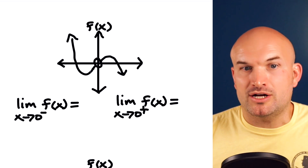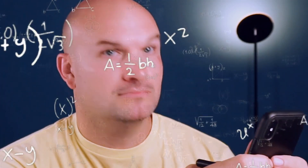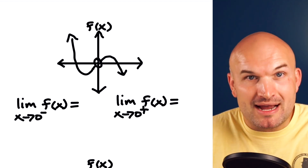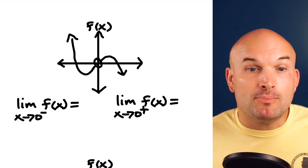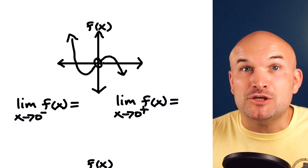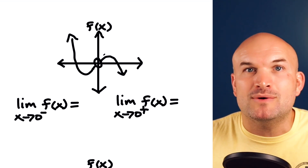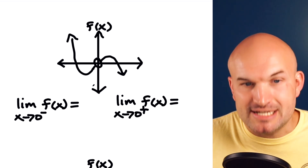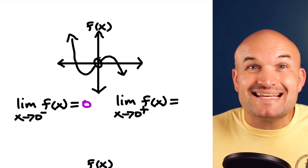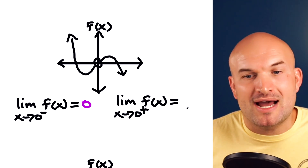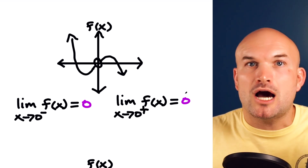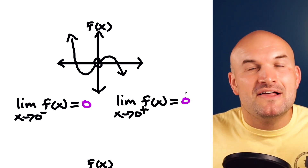This next example is very important. As we're riding this roller coaster from left to right, we're approaching a value that is undefined. But it does not matter what the value is — we're looking for what the value is approaching, and we are approaching zero. From the right hand side, following the roller coaster from right to left, we are also approaching zero from the right. We're not looking for the value of the function — just the value the graph is approaching, which is zero.